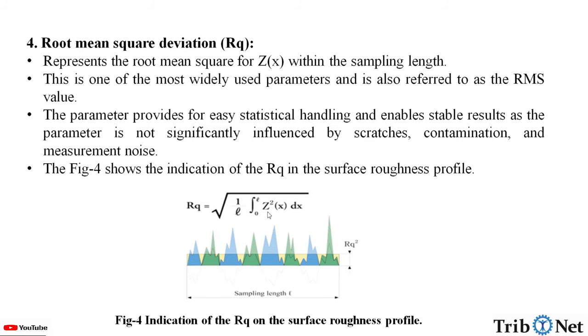The figure 4 shows the indication of Rq in the surface roughness profile. Here Rq is given by square root of 1 by L, limit of 0 to L, Z squared of x dx. Here in this figure we can see the representation of Rq.